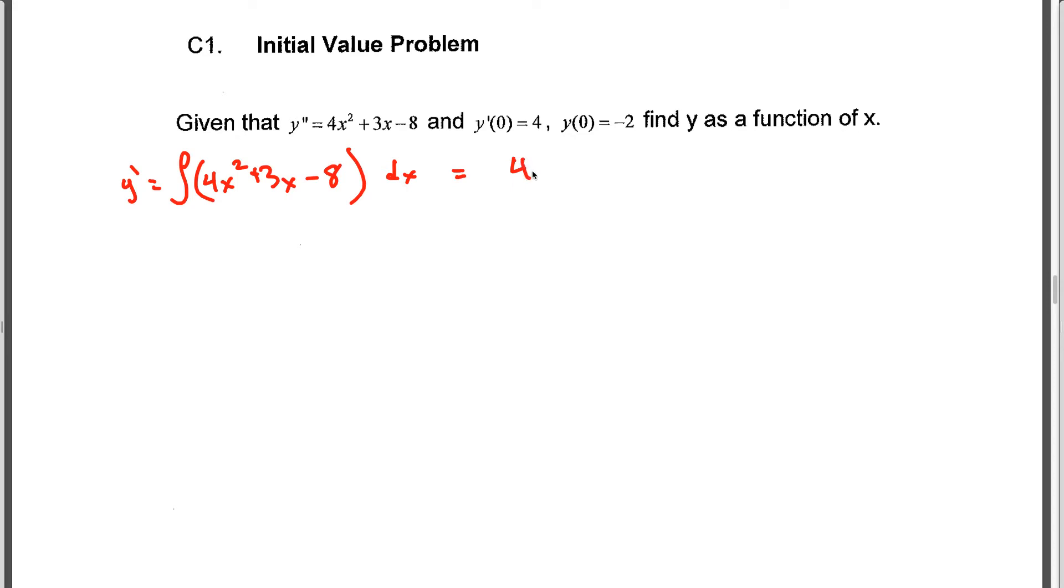So this is going to give us 4x³/3 + 3x²/2 - 8x plus a constant. And we're told the first derivative at 0 is 4, and just by noticing here, multiplying all these by 0 is going to result in 0, and that tells us then that C is equal to 4.